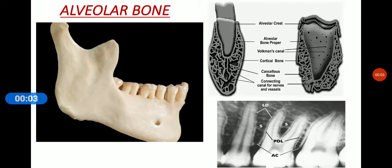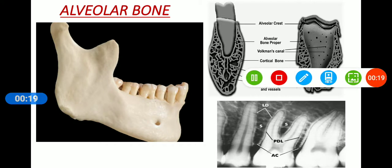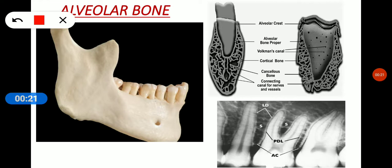Hello everyone. I have seen a lot of students are confused between alveolar process, alveolar bone proper, cribriform plate, cortical plates, etc. So in this video I'm going to clear all your doubts. So let's begin.